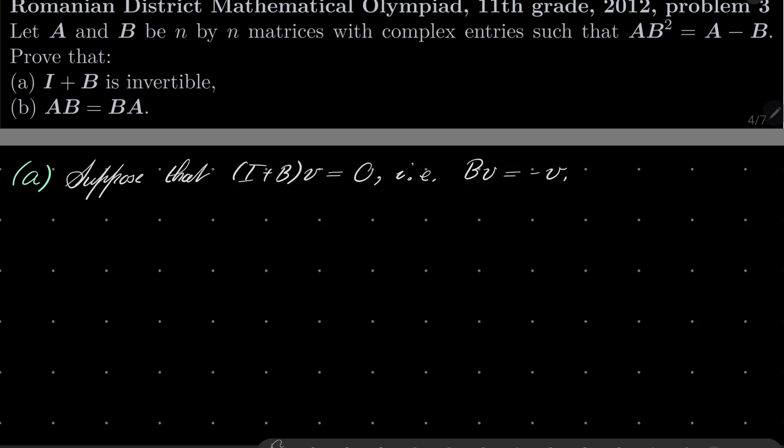But notice that then we have the following: AB squared times our vector. Well, it's A times B times B times this vector. So it's AB, B times V is minus V. This minus can be put in front. And again, BV is again minus V. Two minuses cancel, it's AV.